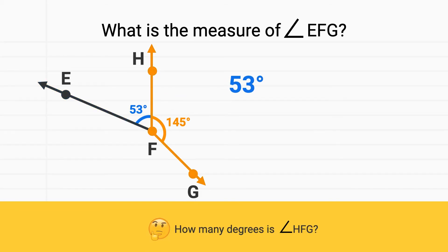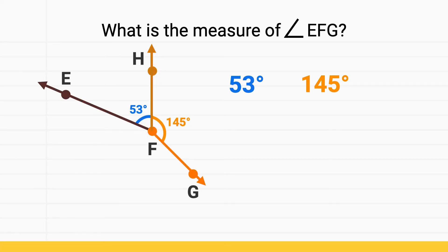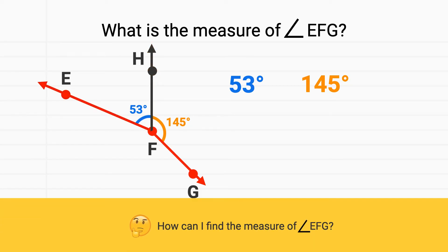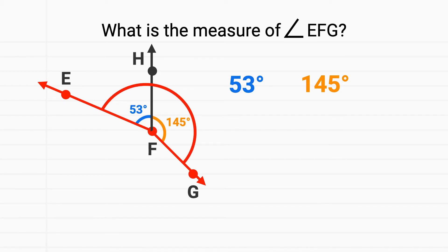Then how many degrees is angle HFG? We can see that angle HFG is 145 degrees. Now how can I find the measure of angle EFG? All I'll need to do is add together those two pieces. So 53 plus 145 equals 198 degrees.